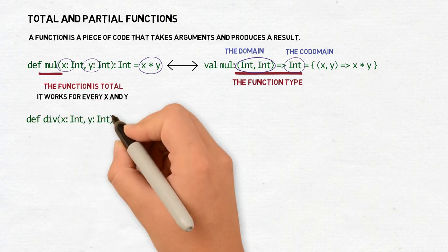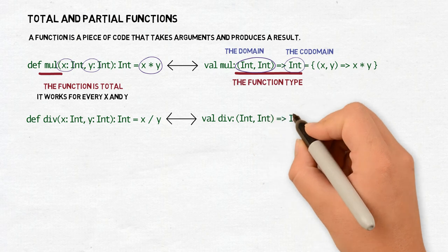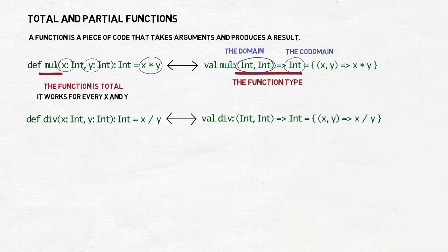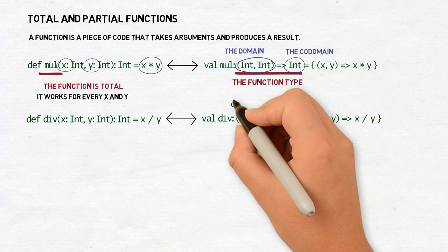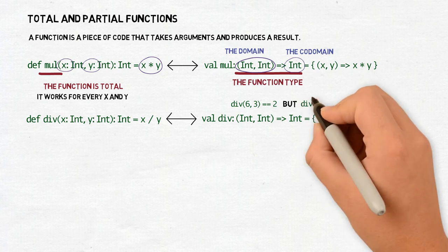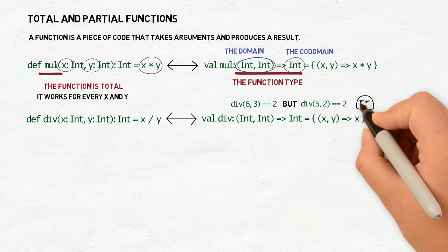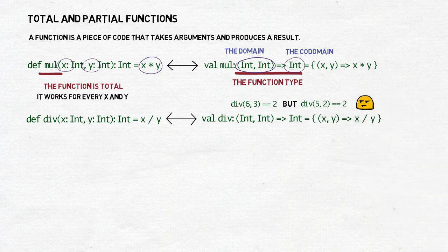But how about division? Let's say we have another function, div, which looks like this. For a lot of values of x and y, the div function gives a proper result of the type int, but you already see where we are going. If x can't be divided by y without a remainder, in Scala the remainder will be ignored and we will get only the integer part. For example div 5 and 2 is equal to 2. It's surely not an ideal solution.